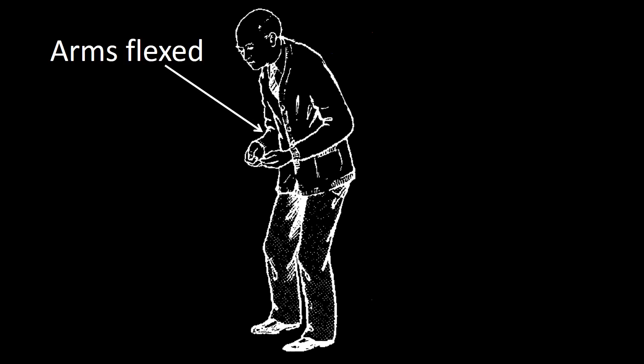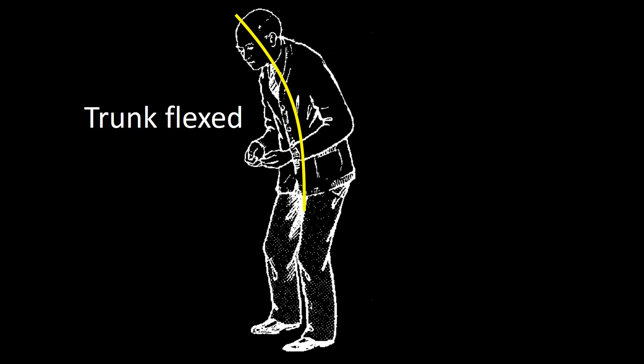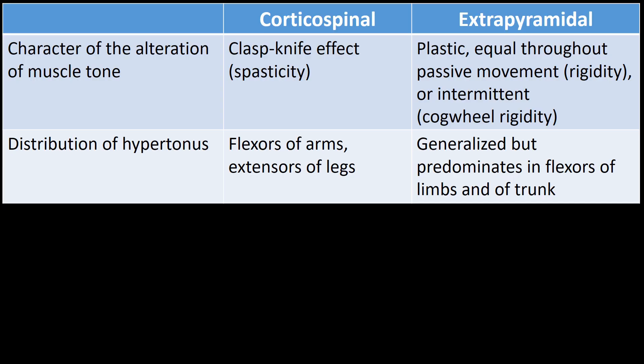This is a representation of a patient with Parkinson's disease, the most prevalent extrapyramidal disorder. As you can see, the arms are flexed, the legs are bent, and the trunk is also flexed.